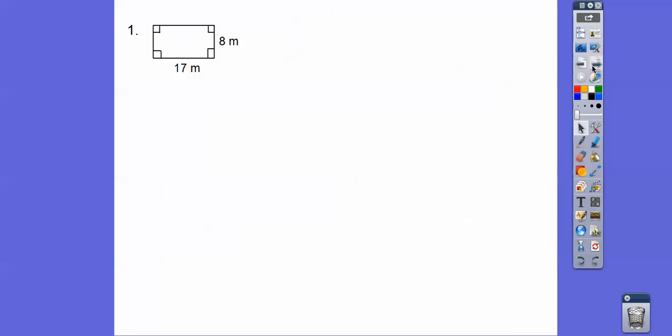Okay, so this first one right here is a rectangle. Rectangles are just base times height. So 17 times 8 is 136. And don't forget, area is always square units. When we get into the next chapter, volume, that's cubic units.